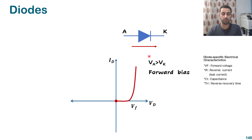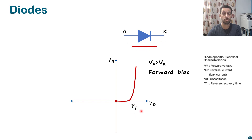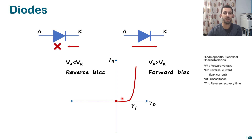Forward bias operation makes the diode drop some voltage while it's conducting. So it passes the current from anode to cathode but also drops some voltage, and that voltage is called the forward voltage. This is the usual IV curve for the diode, whether it's a signal or power diode. It also has another region which is the reverse bias.